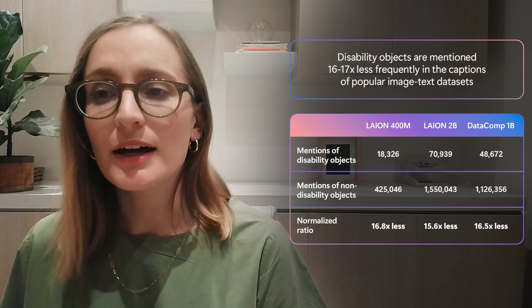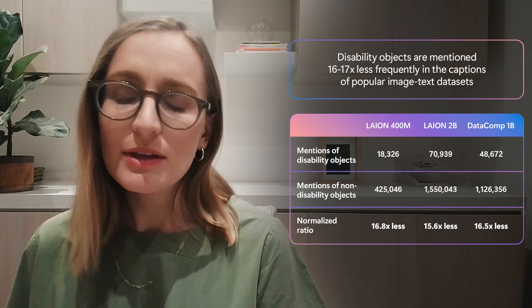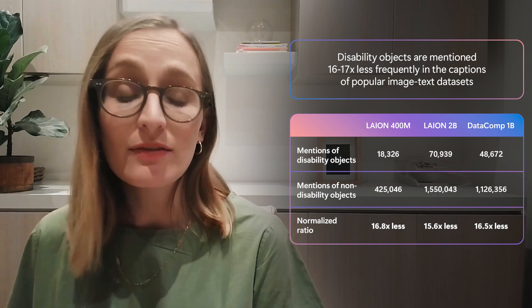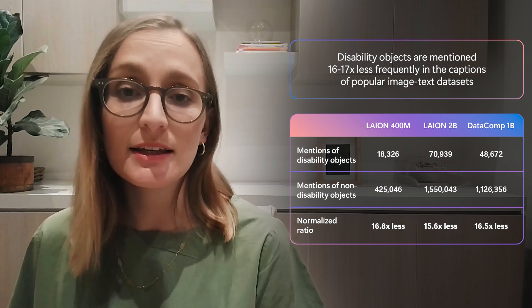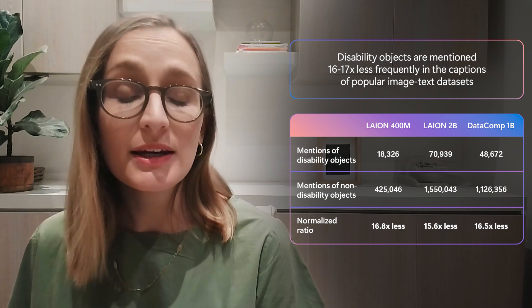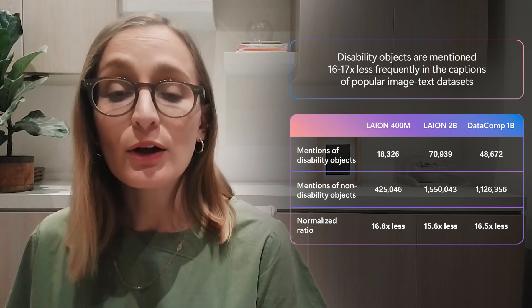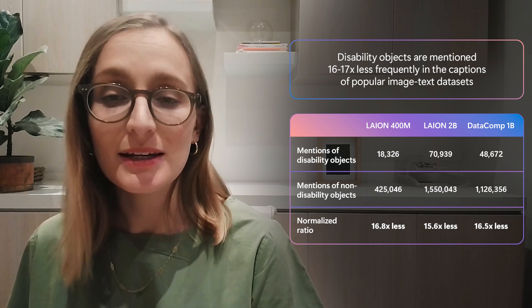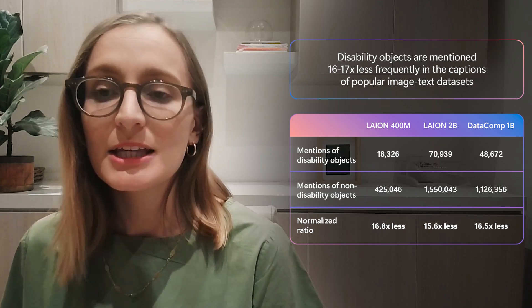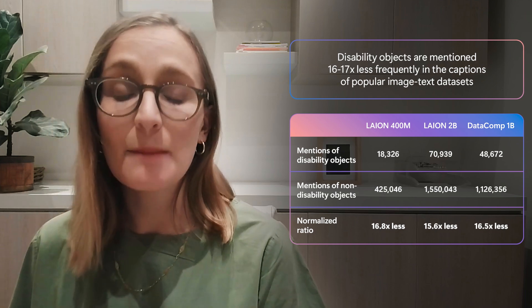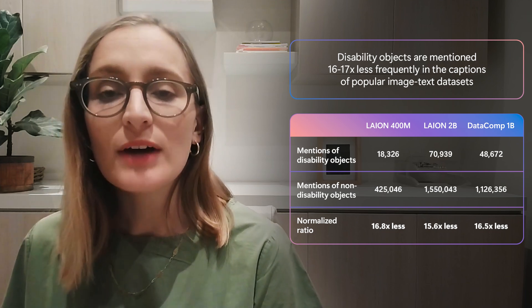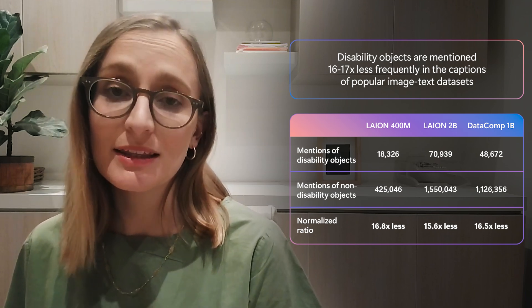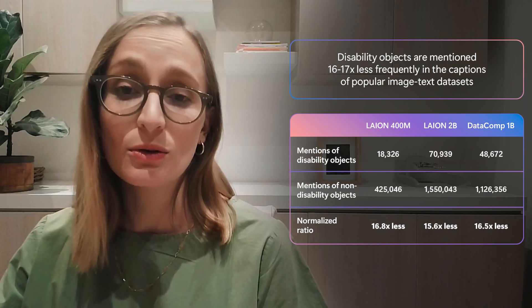Towards our third and final finding, we wanted to understand where these performance disparities were stemming from. We quantified how prevalent disability content is in three popular datasets commonly used to pre-train large models: LAION 400 million, LAION 2 billion, and the DataComp 1 billion dataset. Specifically, we counted how many times objects are mentioned in these datasets' captions, and found that disability objects appear up to 16 to 17 times less frequently than non-disability objects across all three datasets.